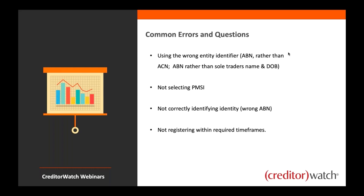Some common errors: the first is using the wrong identifier for your customer. It's not just a case of using the ABN every time — it's important to find out what type of business or commercial entity you're dealing with. If you're dealing with a company and have their ABN, check if they've also got an ACN and always use the ACN in that case. People sometimes use the ABN when dealing with sole traders, which is also incorrect.